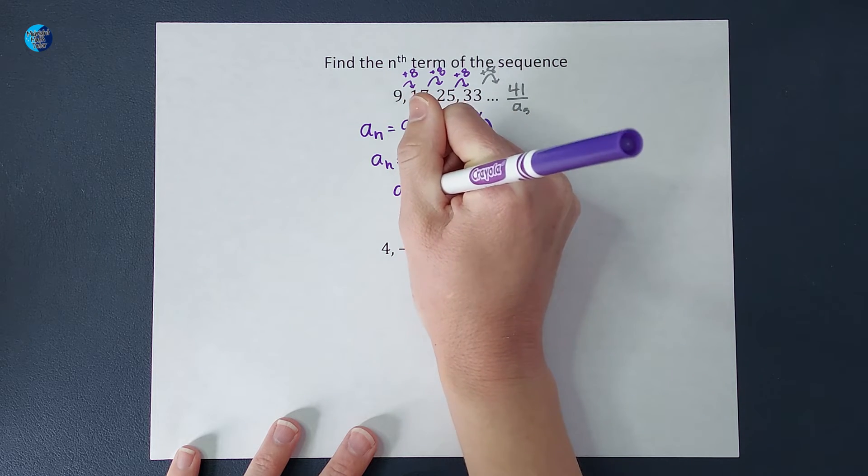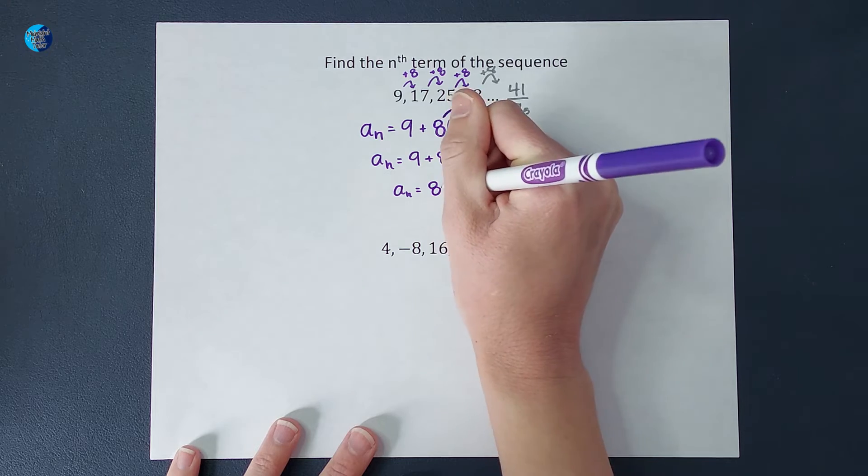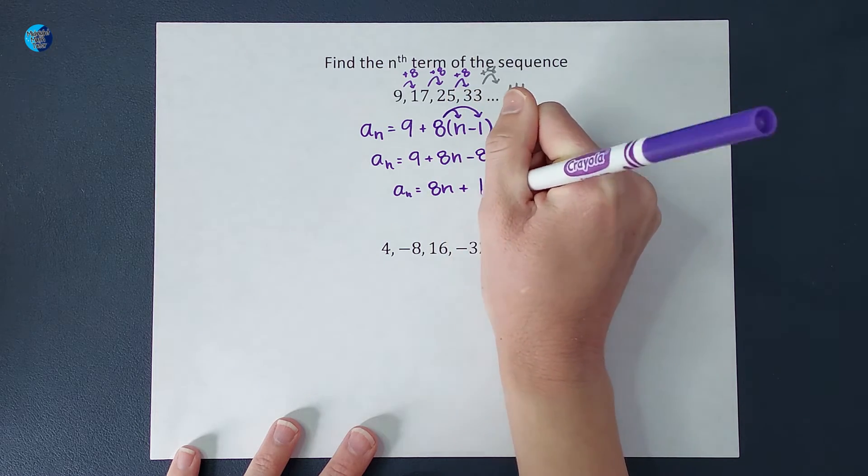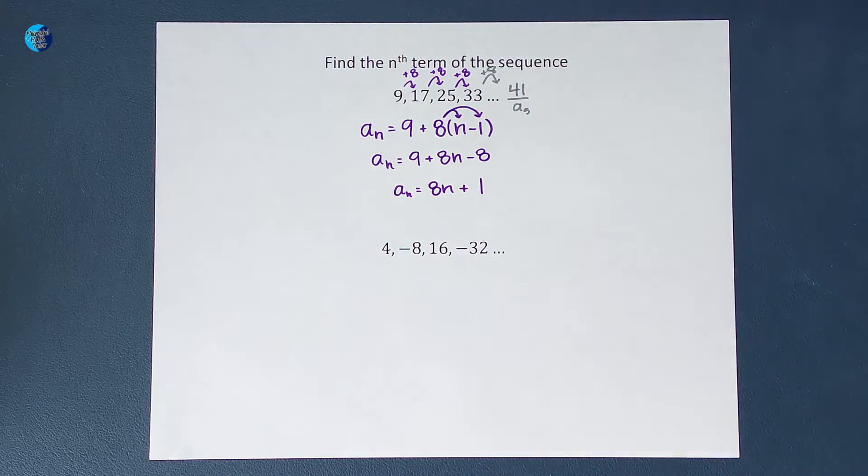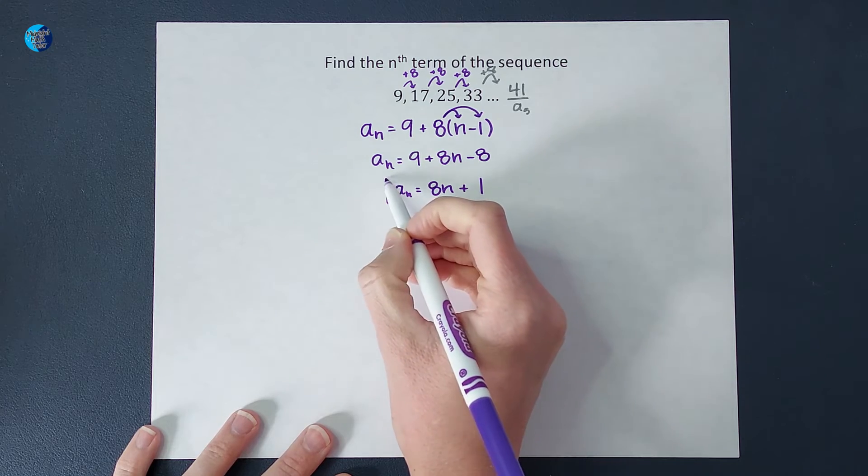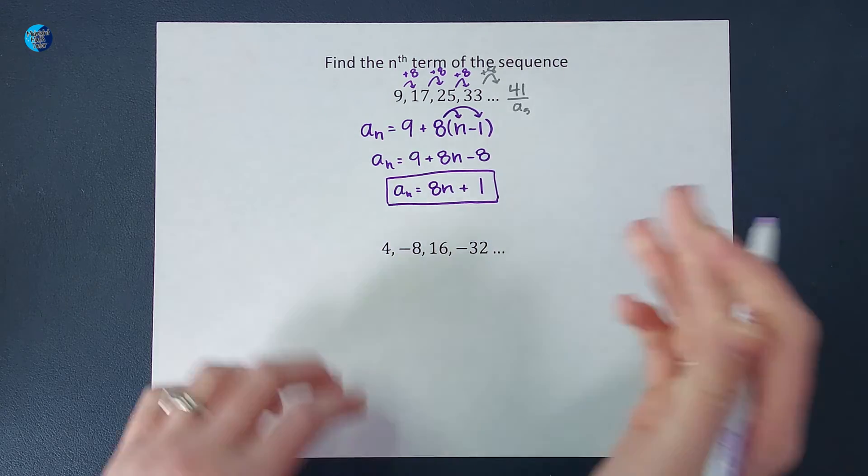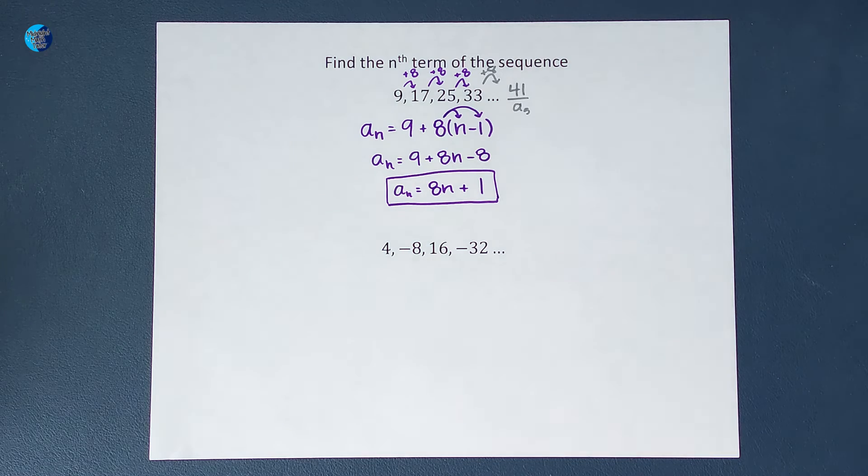And then I'm going to combine like terms and end up with 8n plus 1. So someone could use this formula to find the nth term, which just means whatever number they want to find, they can use this.